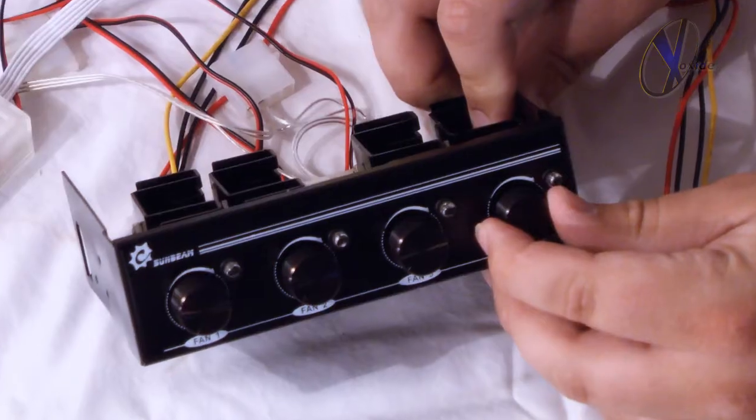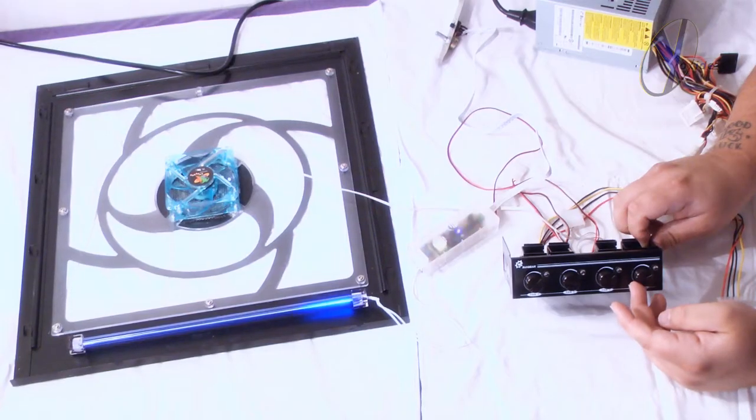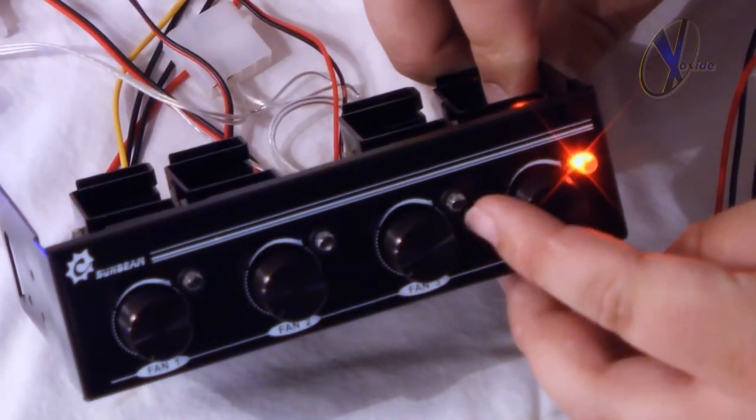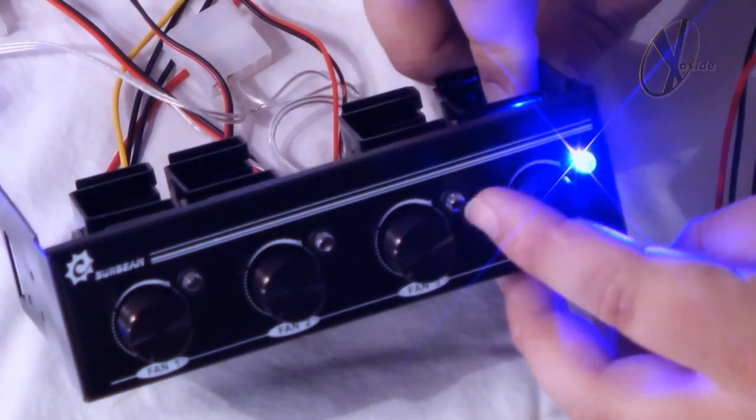As we turn on the cathode, you can see the power starting to run through, getting progressively more illuminated the higher we go. The LEDs supplied on this unit go from red to blue as we put more voltage through the channel.